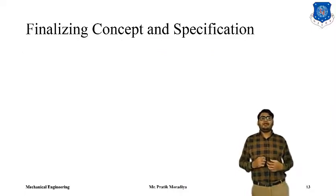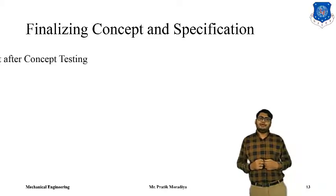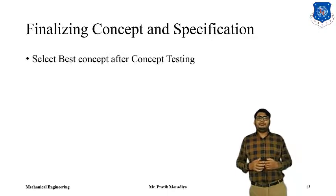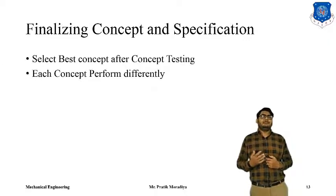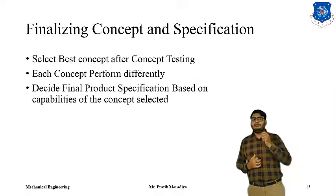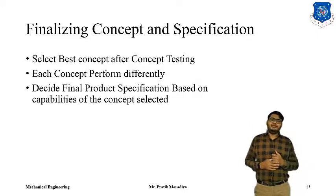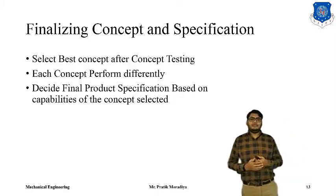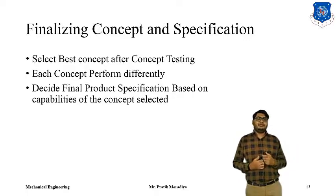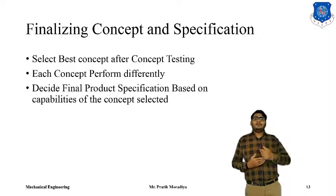Now, after concept testing, we also have to finalize a concept and select some specifications. After we have tested our concepts, we know which concept performs better, so we can choose the best performing features. Understand that each concept will perform differently — each concept will have its pluses and minuses, its advantages and disadvantages. So the final product specification can be established based on the selected concept, because each concept will have different functionality and each concept will have different specifications.